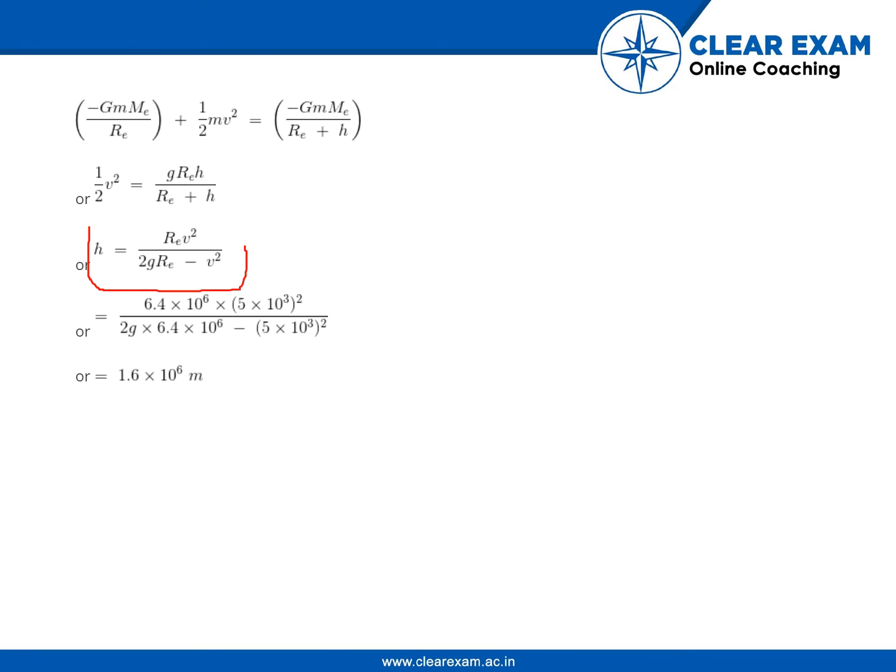This is the formula we got: h = (6.4 × 10⁶ × (5 × 10³)²)/(2g × 6.4 × 10⁶ - (5 × 10³)²).